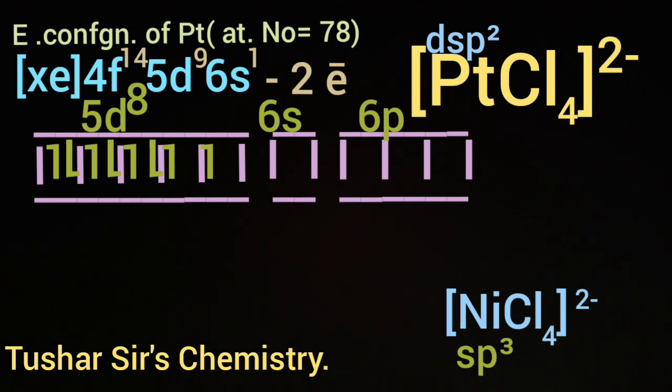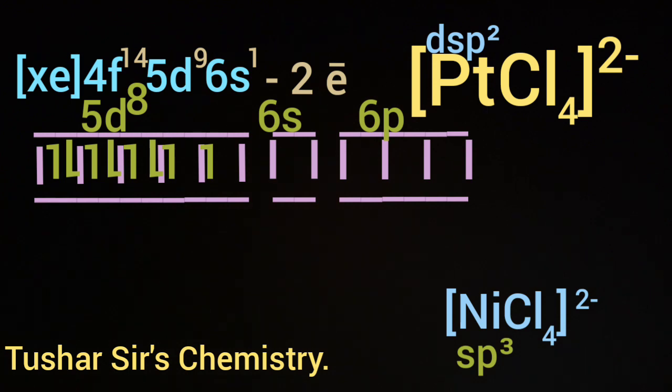It will be xenon at the core, 4f¹⁴, 5d⁸, 6s⁰. This is the electron configuration of Pt²⁺. Pt has vacant 6p.